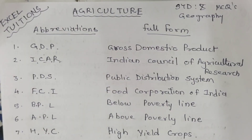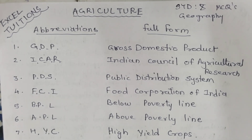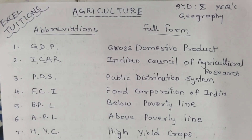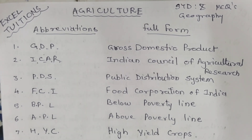Now we will see a few abbreviations from agriculture and its performance. GDP: Gross Domestic Product. ICAR: Indian Council of Agricultural Research. PDS: Public Distribution System. FCI: Food Corporation of India. BPL: Below Poverty Line. APL: Above Poverty Line. HYC: High Yield Crops.